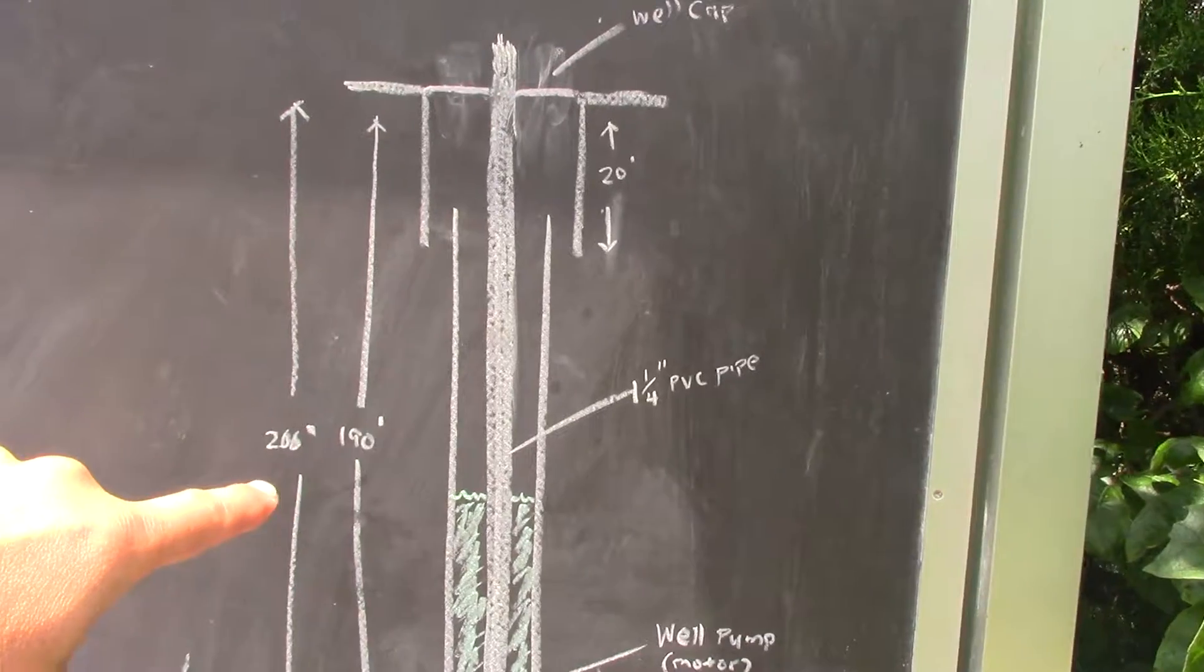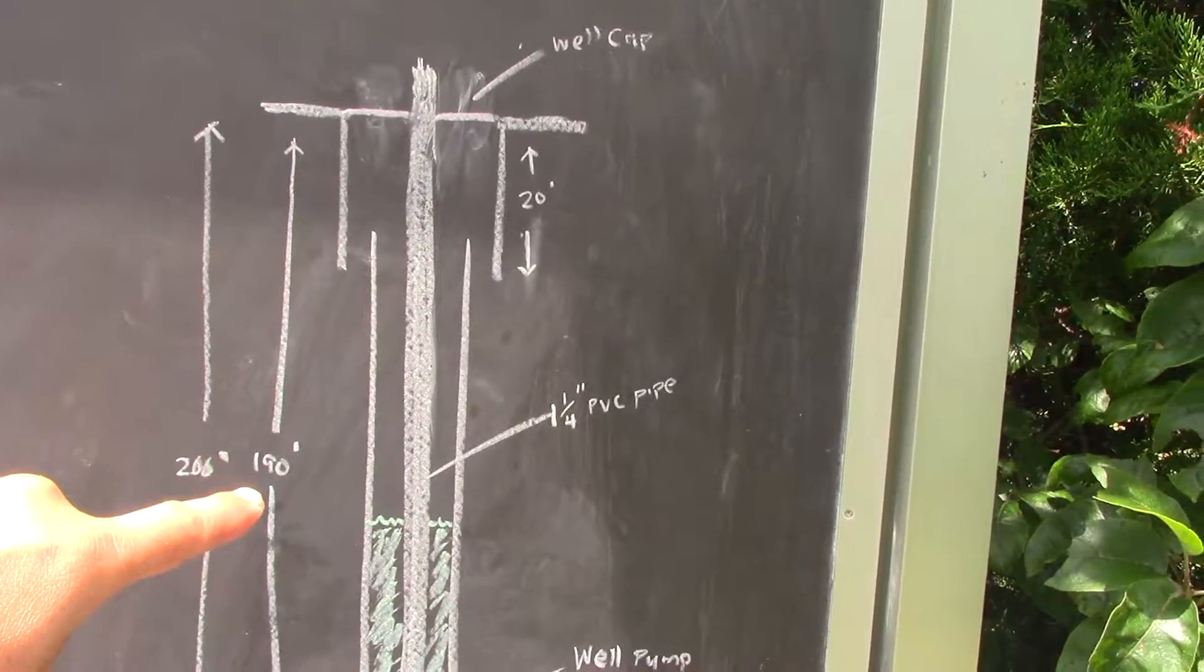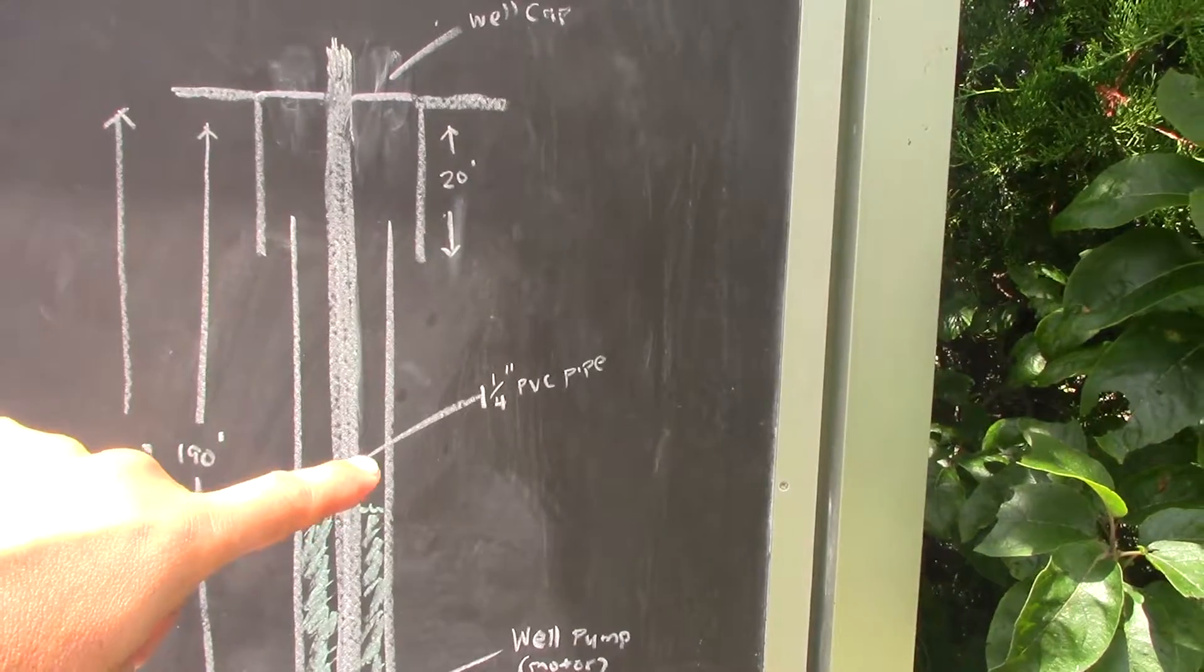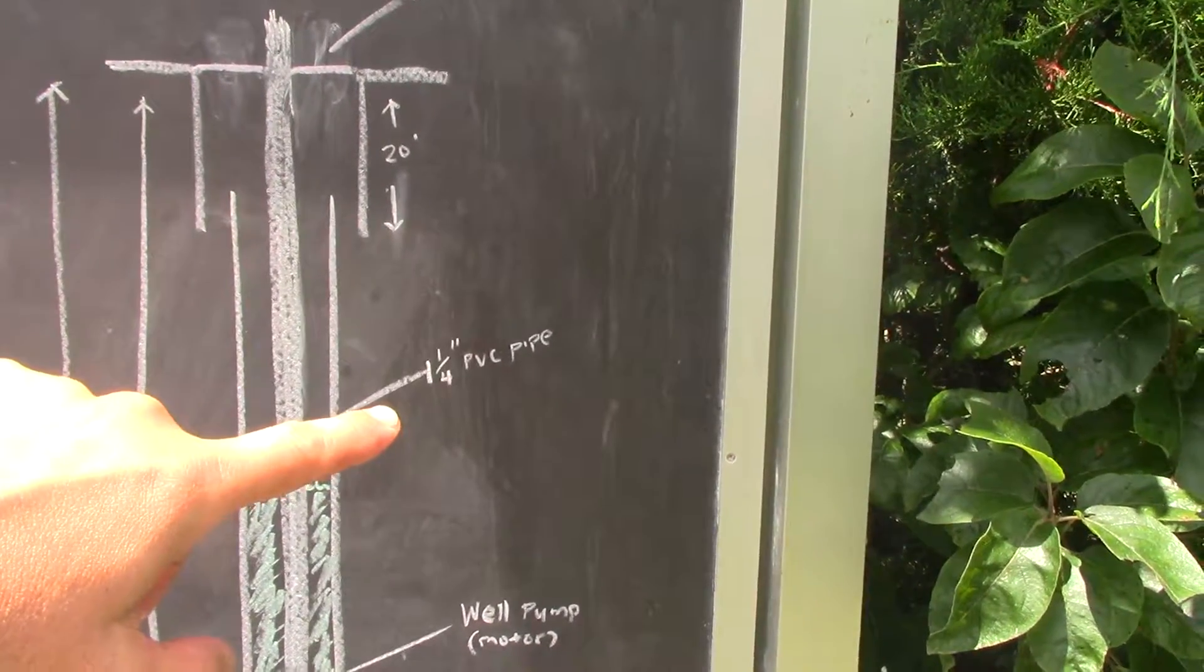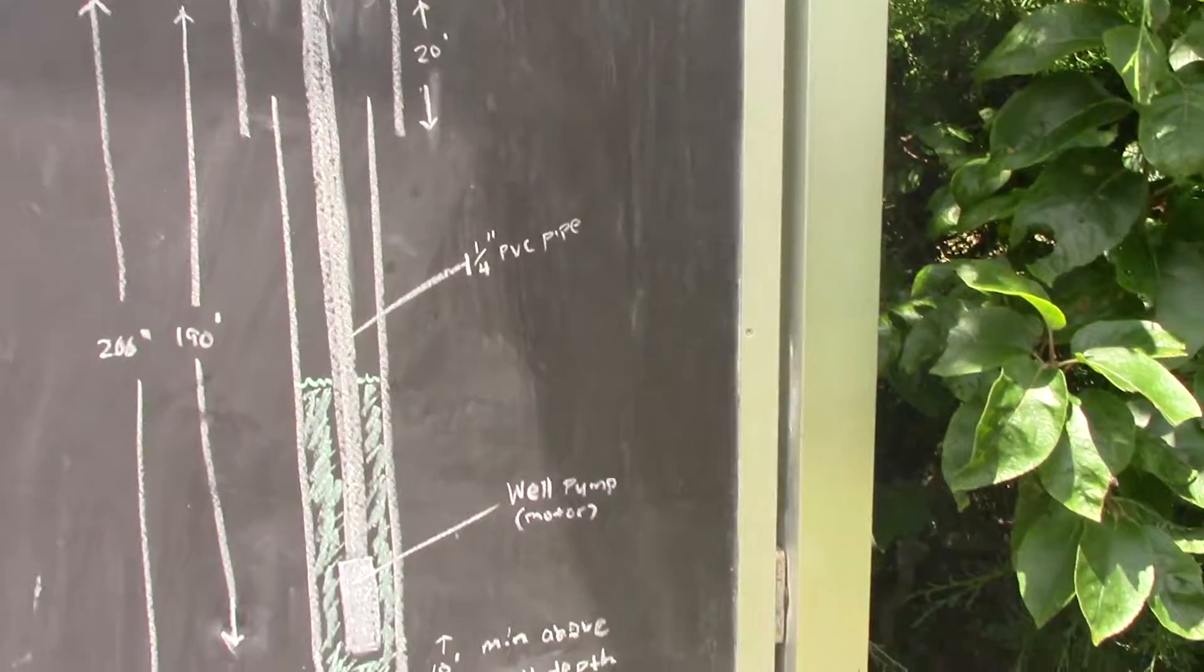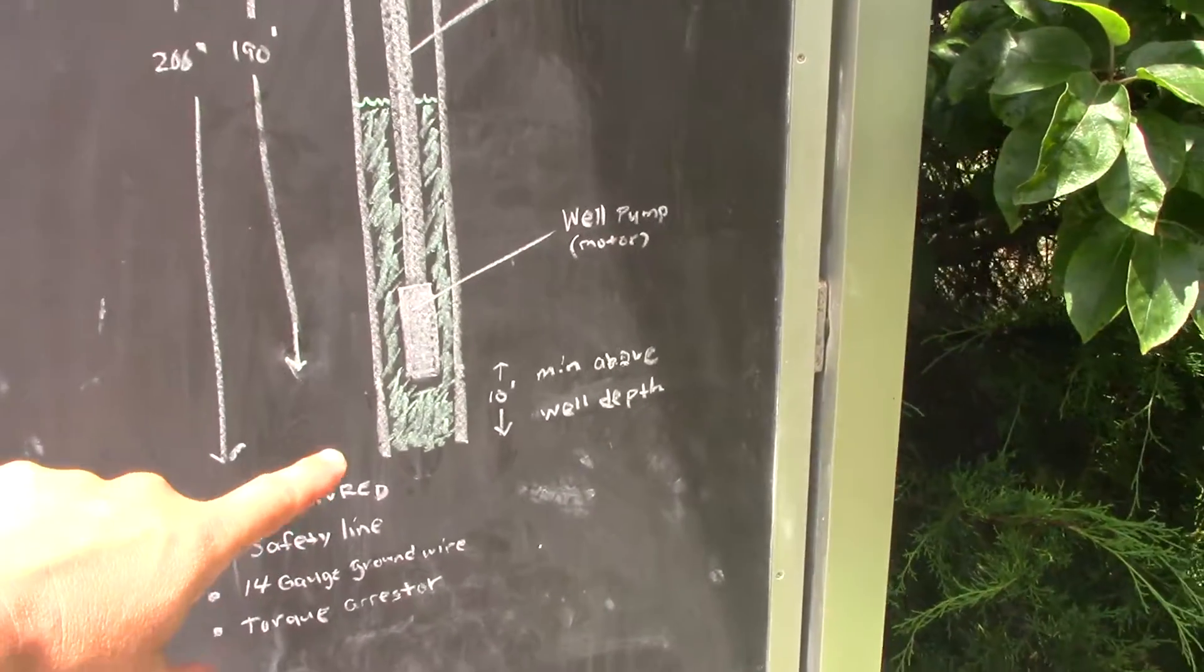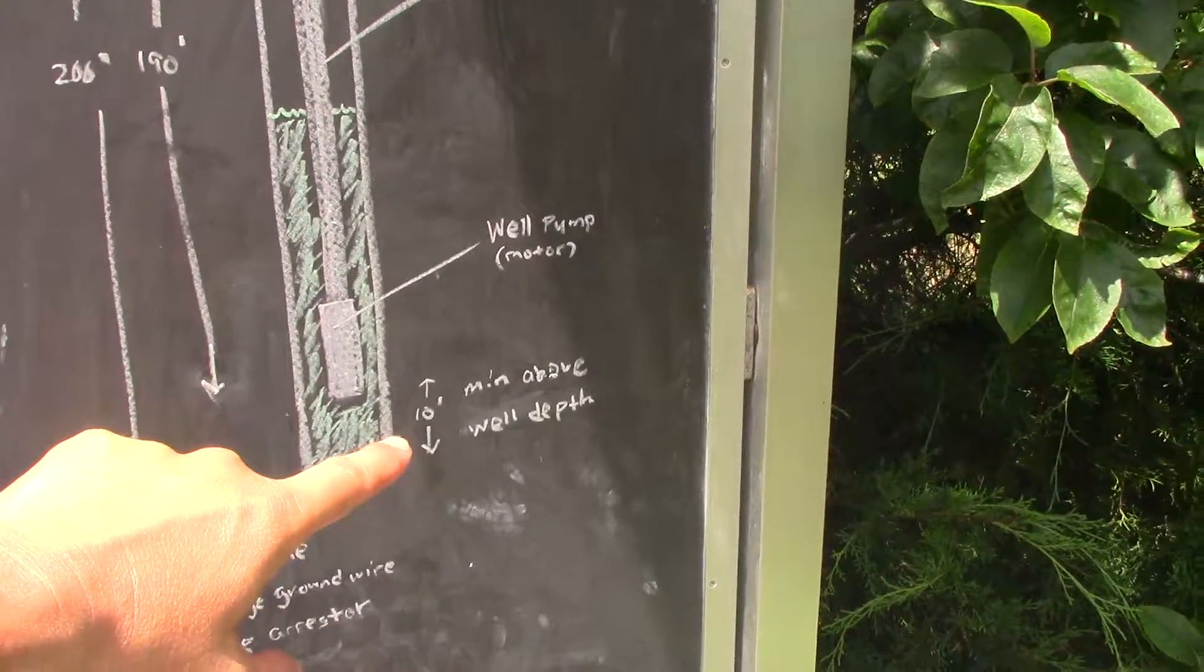The well itself is 200 feet, and the pump goes down to 190 feet. We're using one and a quarter inch PVC pipe. Here's the well pump right there.